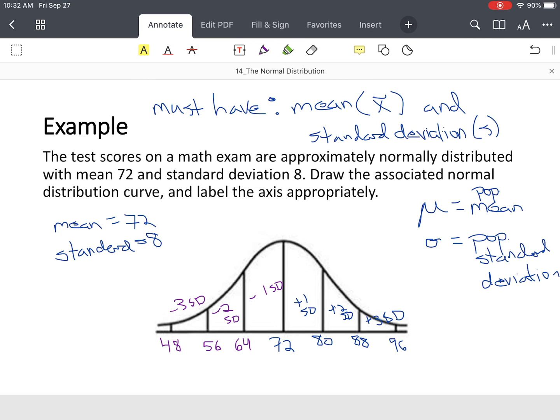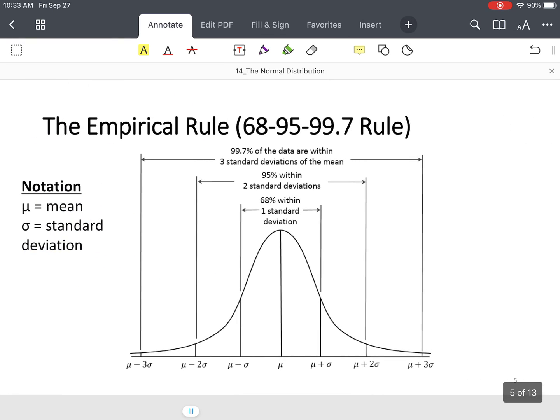That's how you build a curve. You have to have the mean and the standard deviation to build that curve. So now, this is what's called the empirical rule, so this will come up time and time again in statistics. Notice the notation, we use mu for mean, sigma for standard deviation, and we're talking about population.